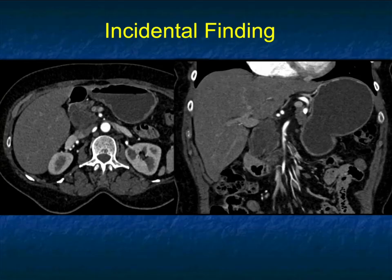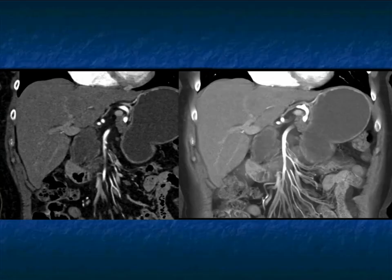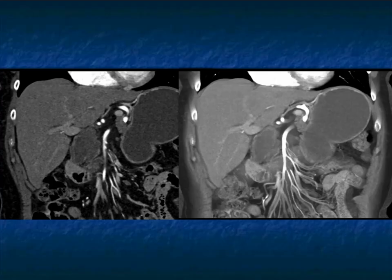Here's an example of a cystic lesion in the pancreatic head. The problem: it's over three centimeters, with slight wall thickening, septations, and slight irregularity. When you see that on coronal or volume-rendered view, and you start seeing a thickened wall or septations — particularly with that size — you need to evaluate further. This is not someone I'd bring back in six or twelve months; I would send them for EUS and fluid sampling. There's a lot of work from Hopkins and University of Pittsburgh where fluid sampling can predict cancer risk.